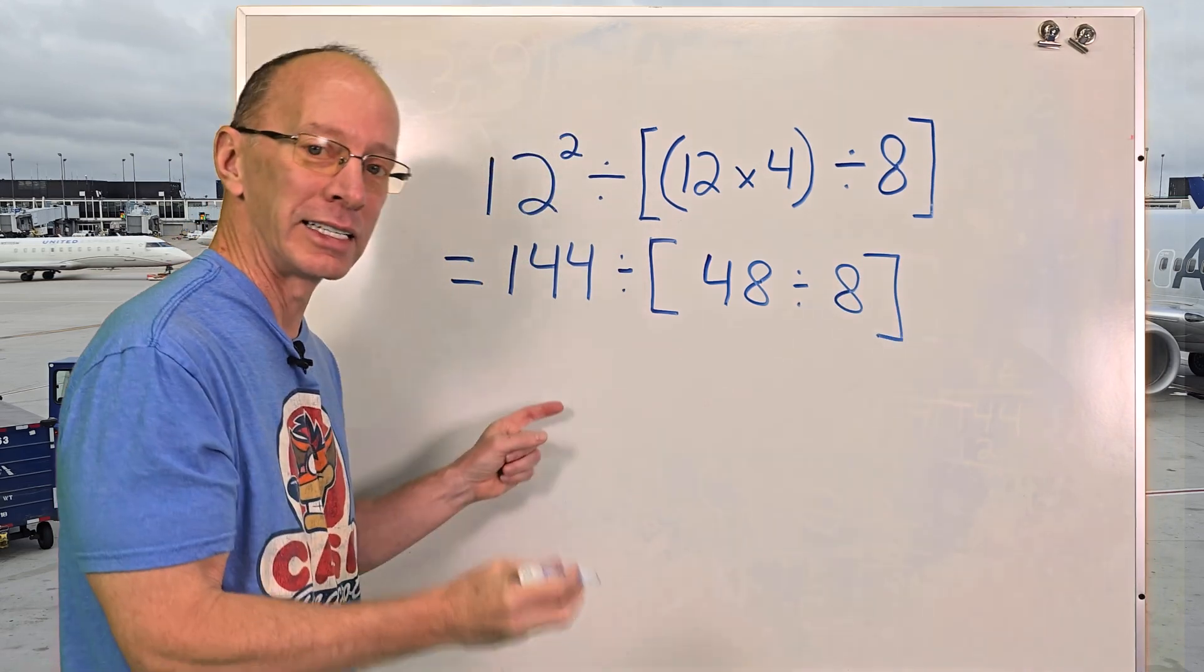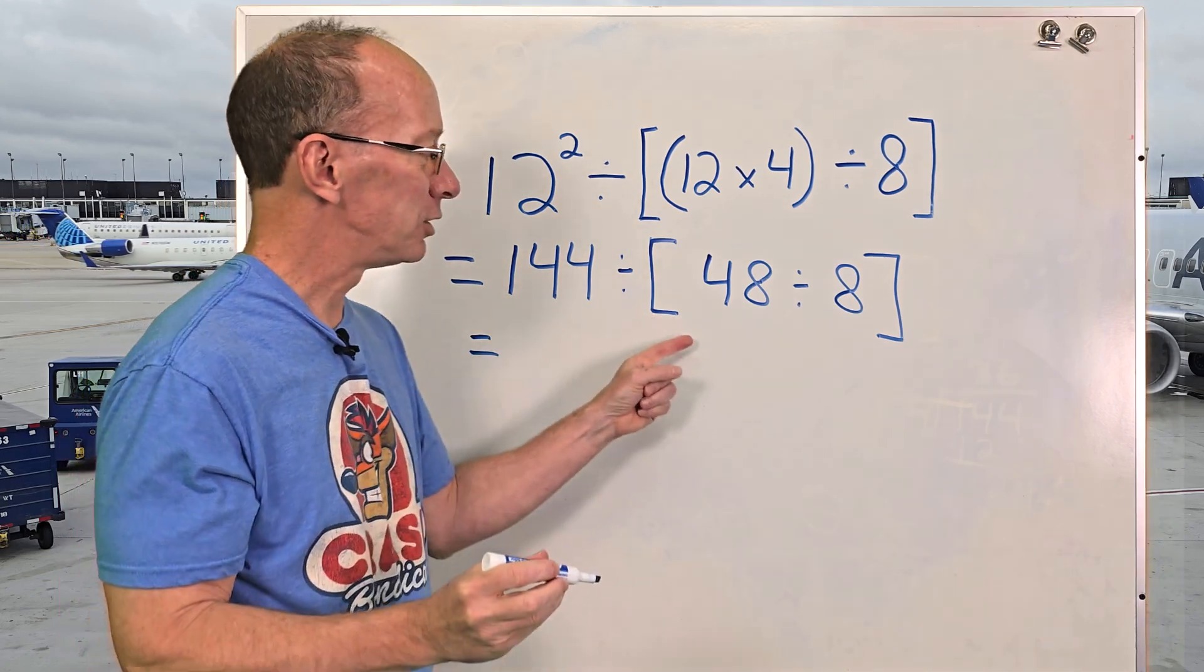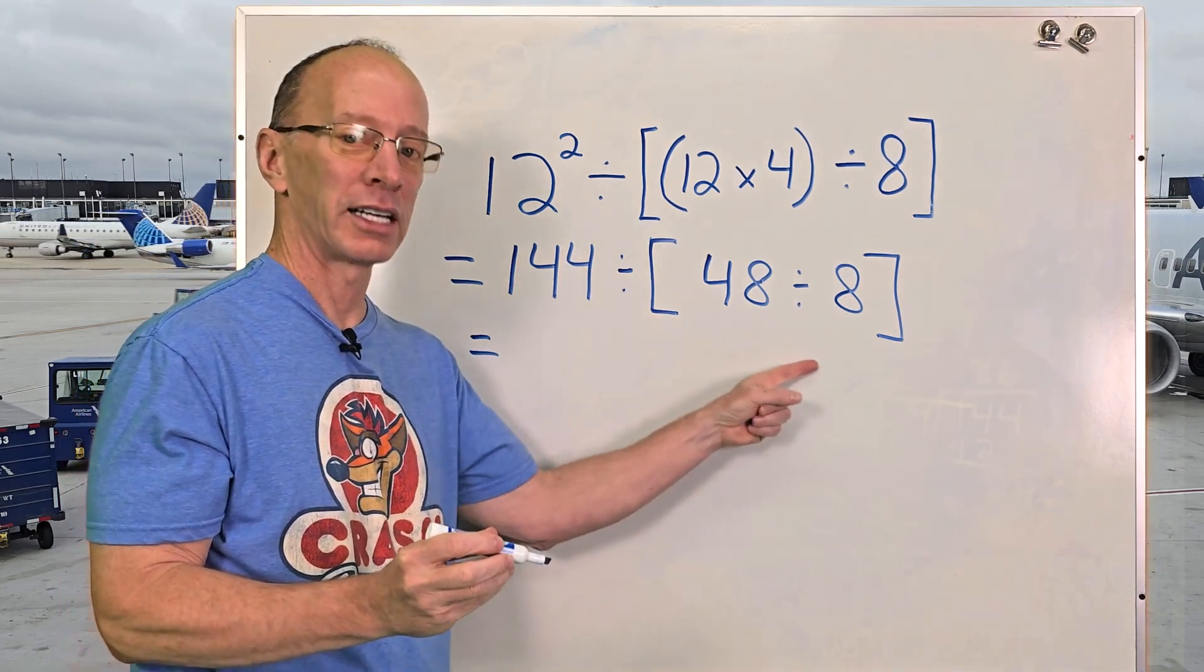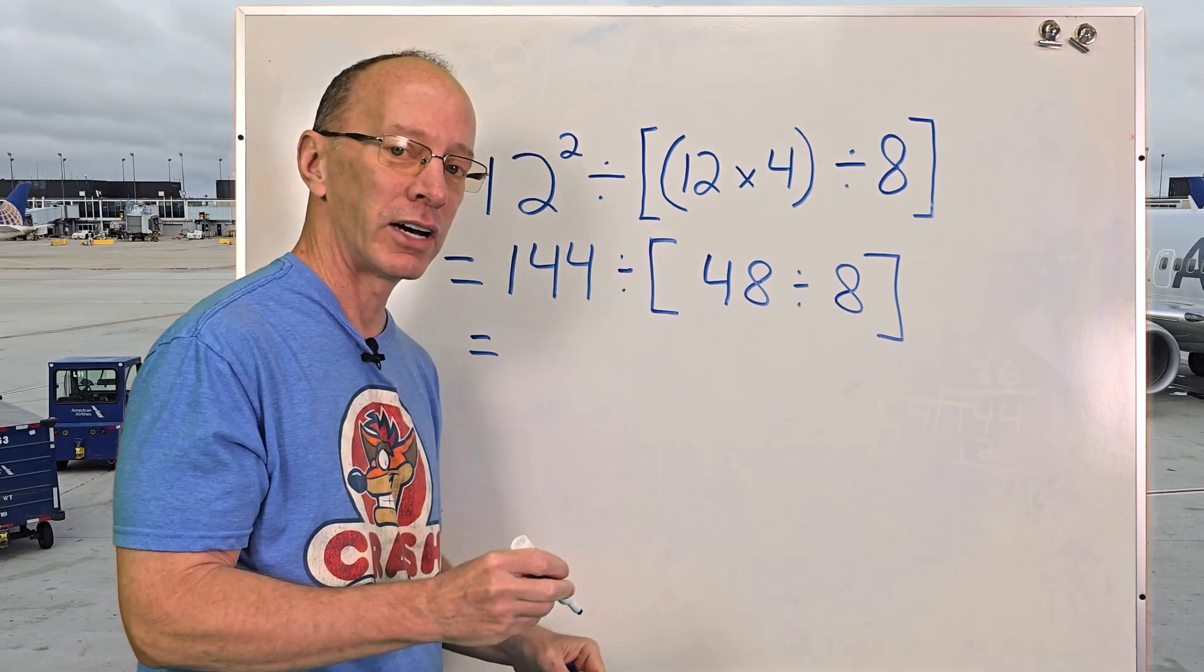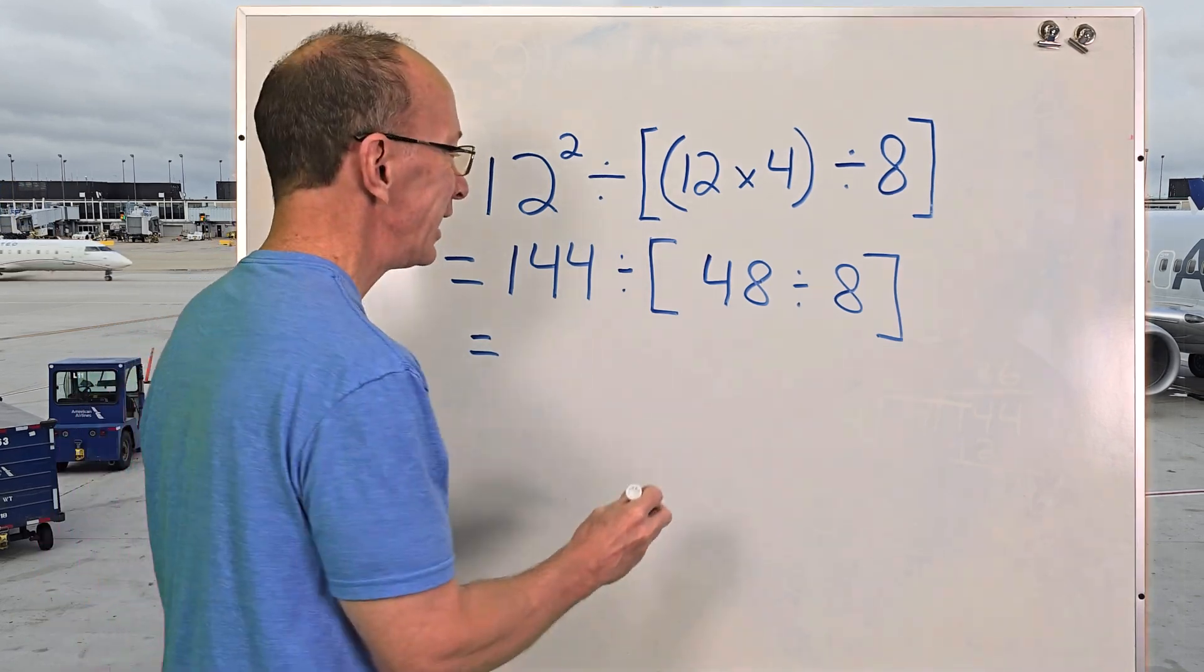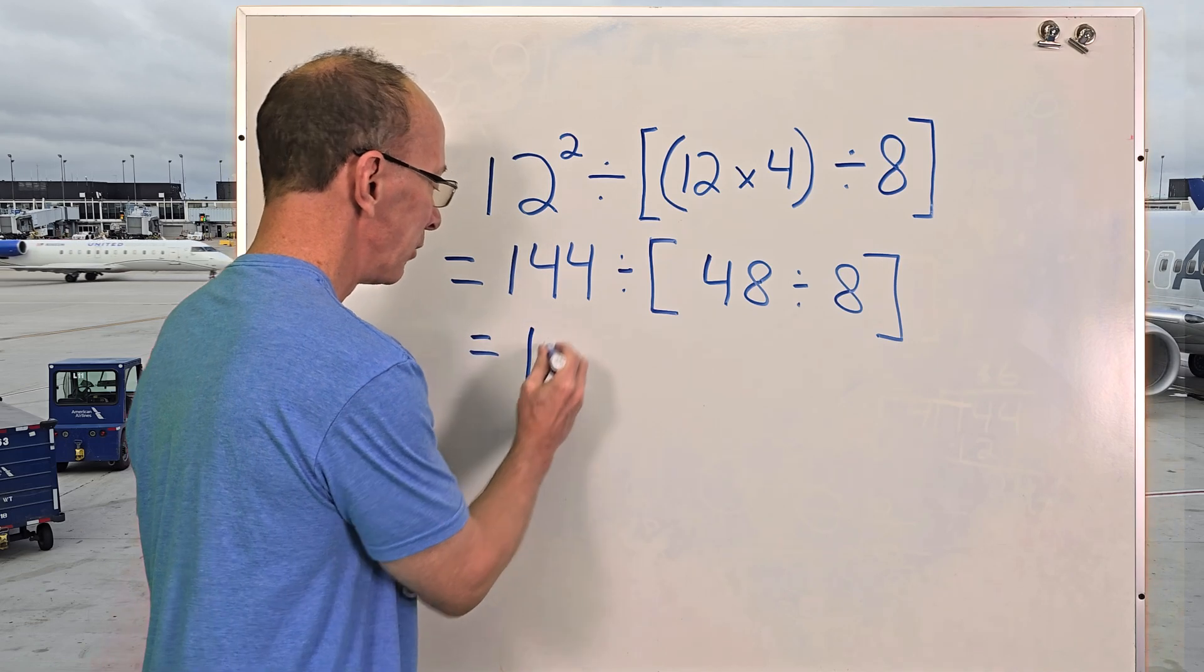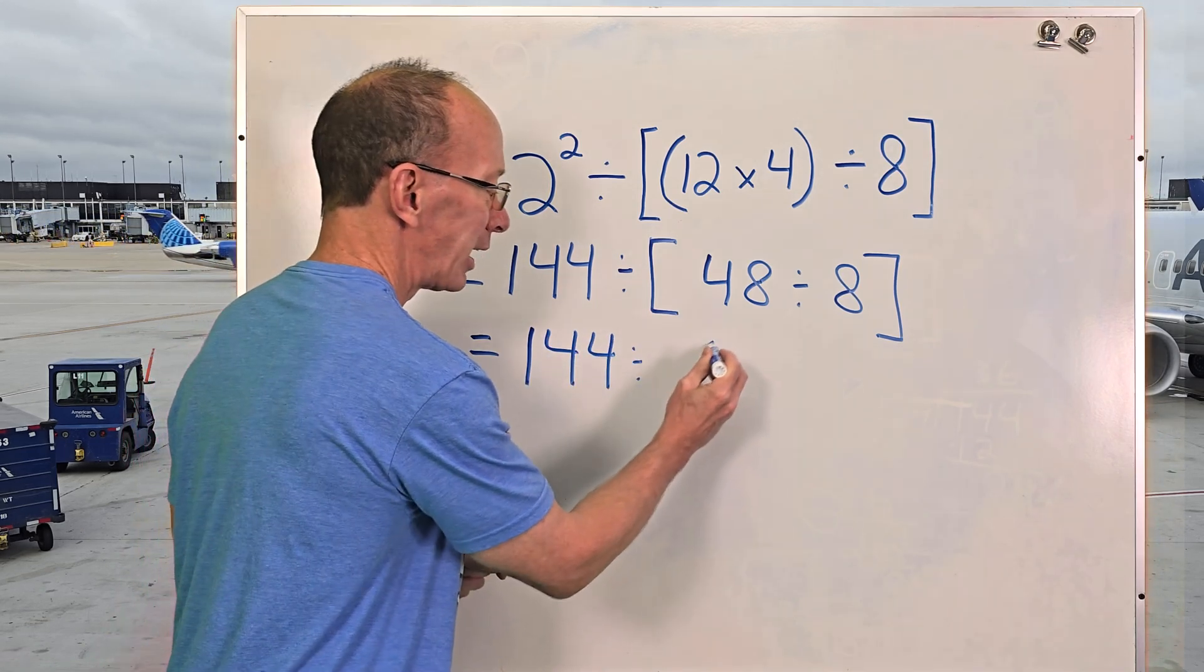All right, let's continue with our problem. Let's do what's inside the brackets. So I have 48 divided by 8. Do you know what 48 divided by 8 is? Yeah, you guys are math ninjas. It is 6. So I'm going to rewrite this again: 144 divided by 6.